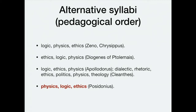The Cleanthes arrangement expands on that: study dialectic first, then rhetoric — both kinds of logic — then ethics and politics, which are both parts of ethics, and then physics and theology, which are parts of physics. The middle-period Stoic Posidonius proposed the order physics, logic, and ethics. This is the standard way of teaching Stoicism followed today because most of our sources follow that order.